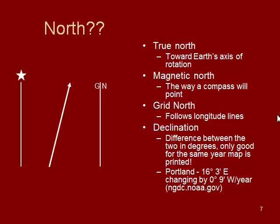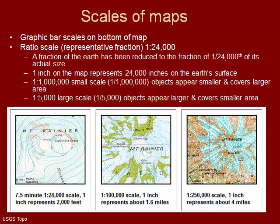Grid north follows the longitude lines on your map, and tends to be the same as true north on a map. We'll look at where this is located on the map in the next video. The other thing you see on a map is called a bar scale or ratio scale, located at the very bottom center of the map. Depending on what type of map you have, it's going to be a different scale. The ratio scale will be listed as one colon and then a number.